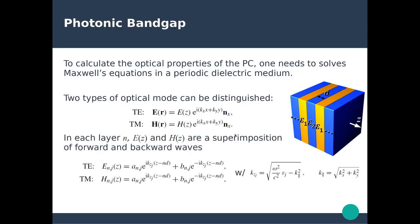Within each layer, the electric field and magnetic field are a superposition of both forward and backward waves — a summation of waves propagating along the z-direction and waves propagating in the opposite direction. This means that within each layer, the electric or magnetic field is simply the superposition of transmitted and reflected waves coming from the interfaces between the different layers.